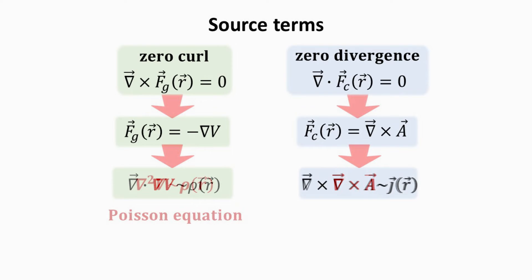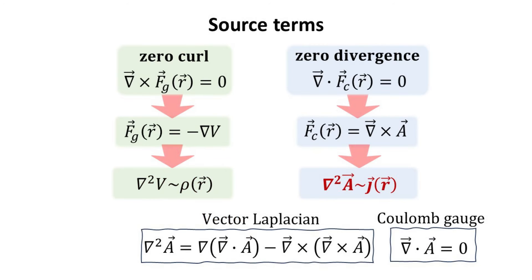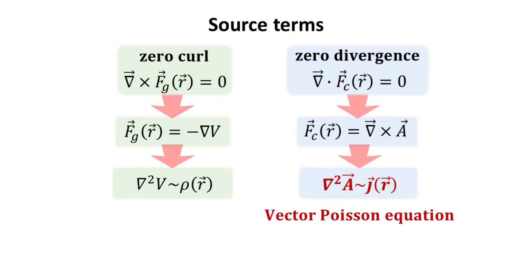The divergence of gradient yields us the Laplacian. This is the well-known Poisson equation. The curl of a curl can be reduced to a vector Laplacian in conjunction with the Coulomb gauge. Note that the definition of curl field is invariant with imposing of the Coulomb gauge. This equation, which involves the vector Laplacian, is called the vector Poisson equation.